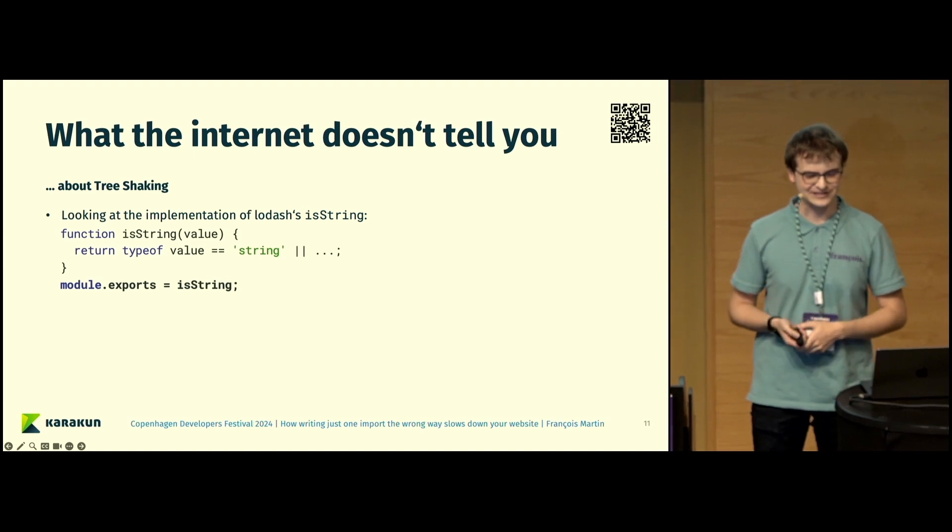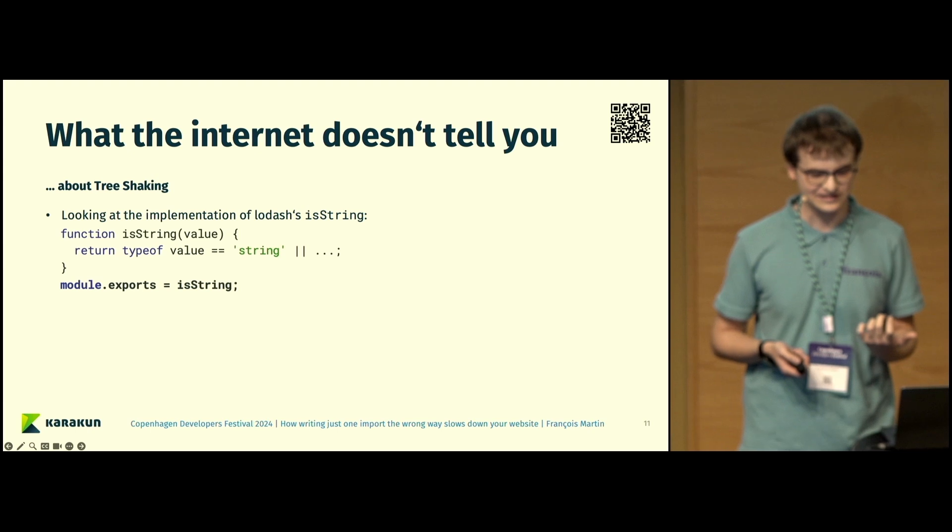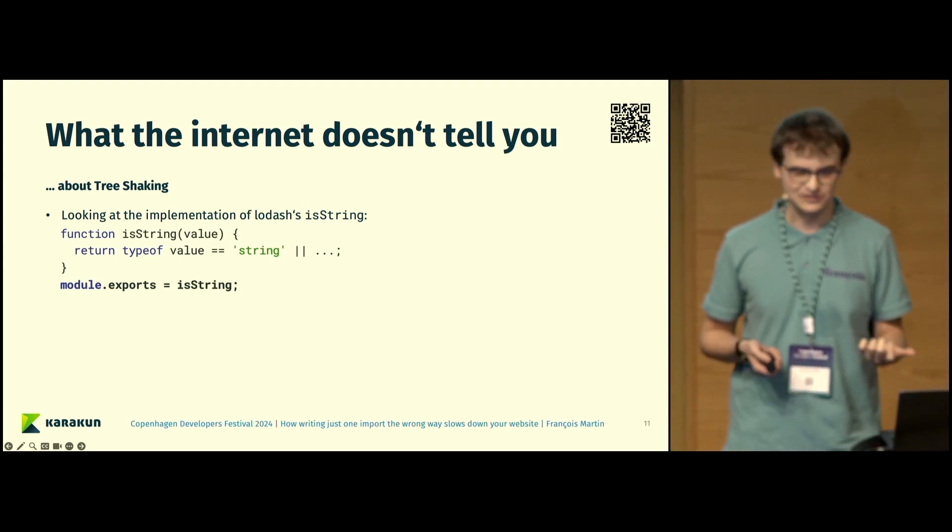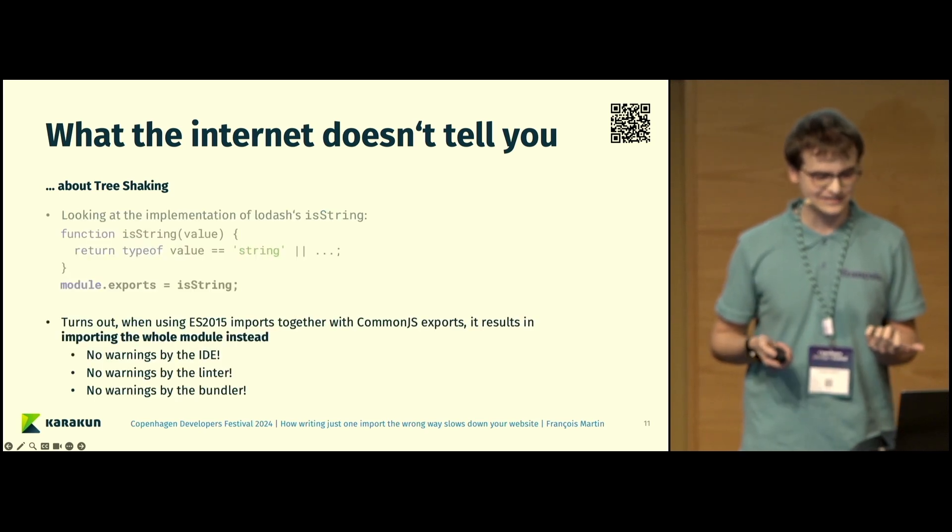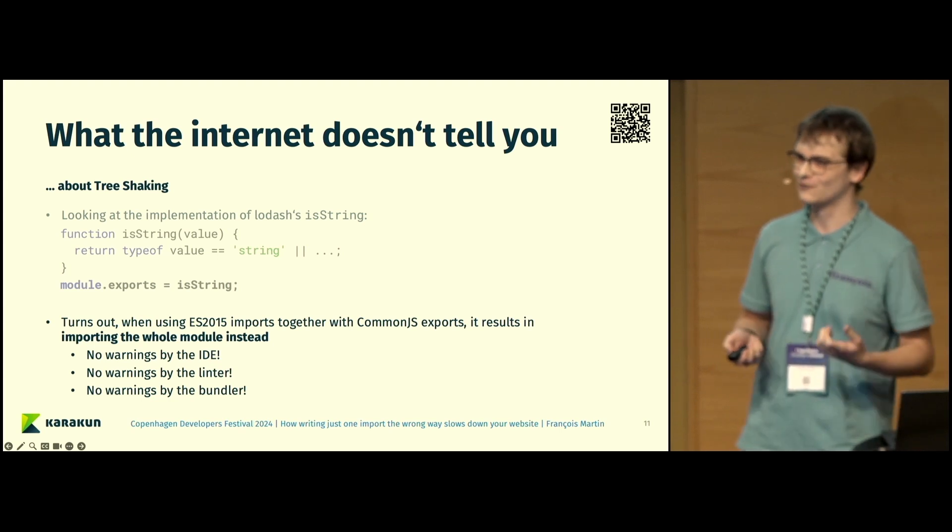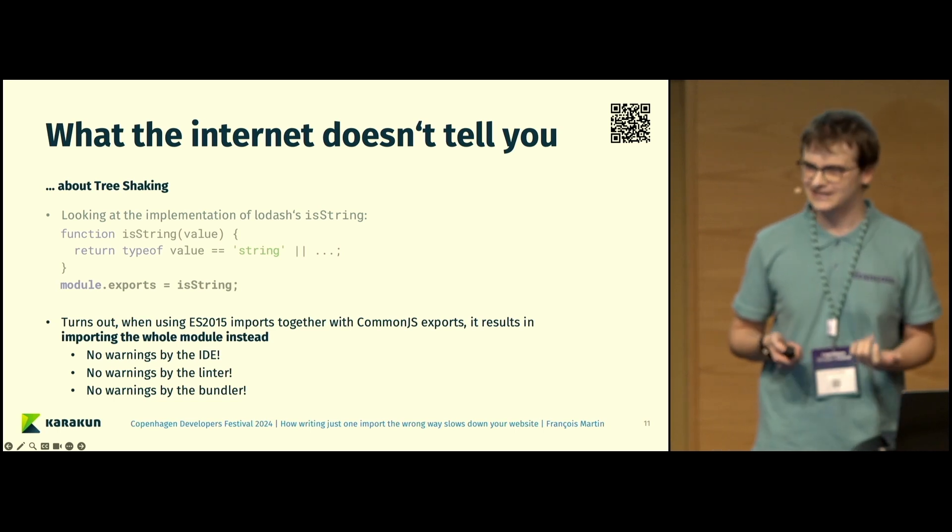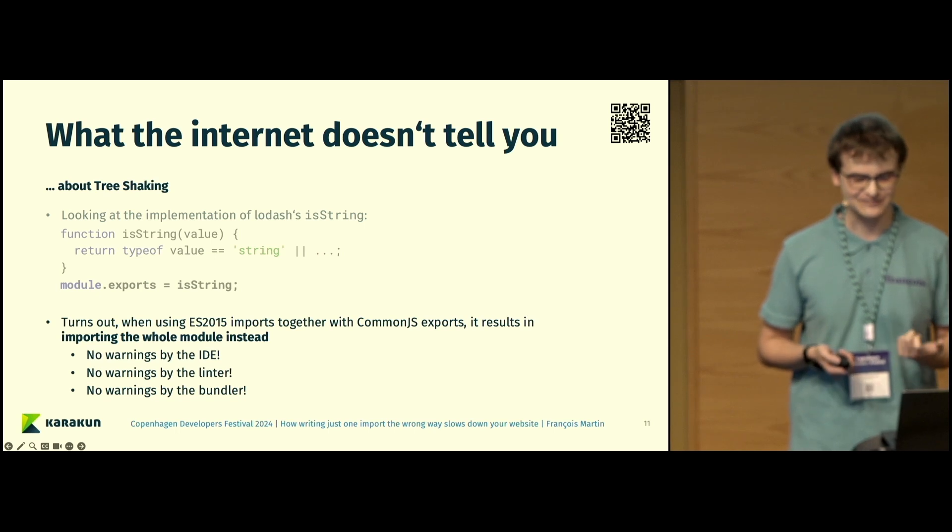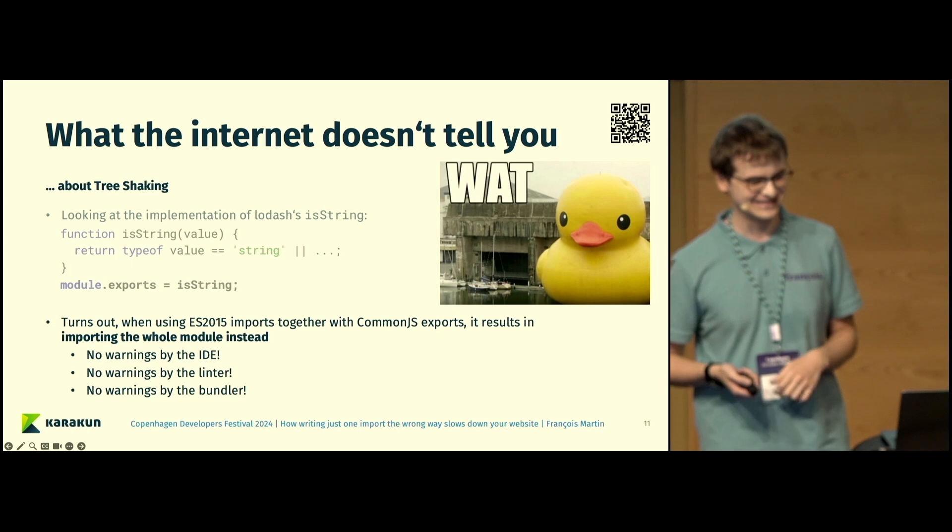If you look at the implementation of isString from Lodash, you can see here that it uses CommonJS-style imports and exports, which I mentioned cannot be tree-shaken. But that's actually not all. What's worse is that when you use ES2015 imports together with CommonJS exports, it results in the whole module getting imported instead. This was quite surprising to me. There are no warnings by the IDE, no warnings by the linter, no warnings by the bundler. This was really a what moment for me.